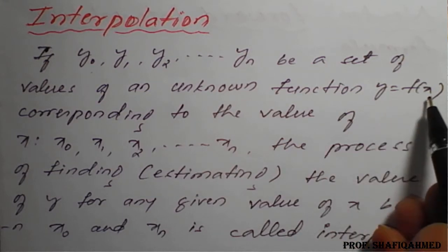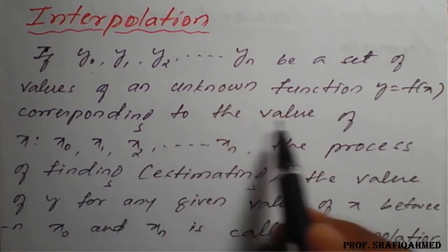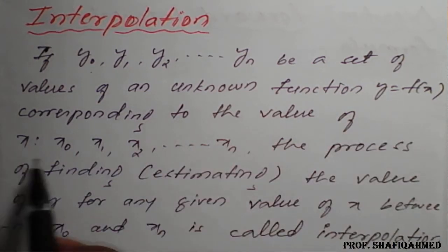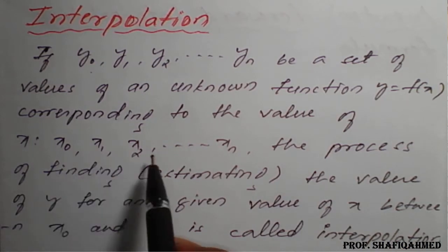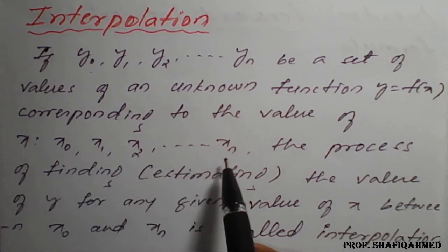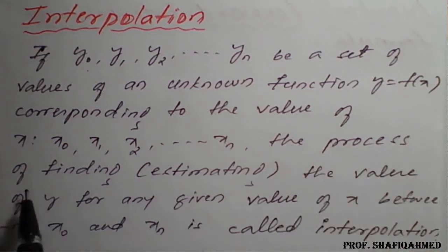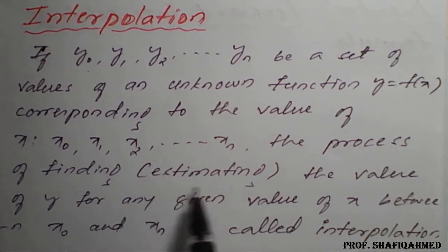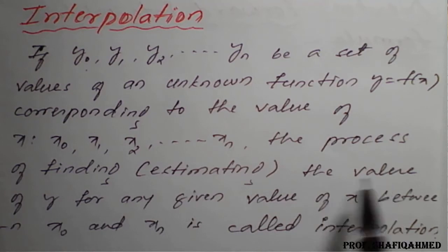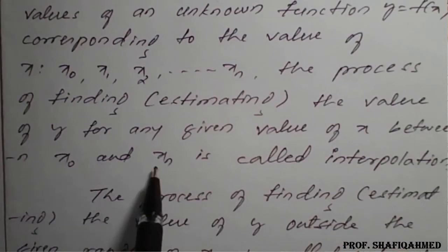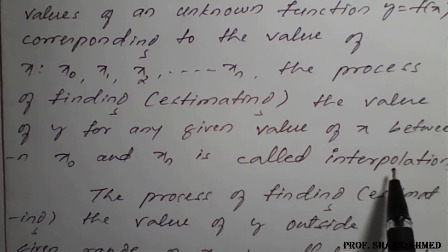y equals f of x corresponding to the value of x that is x0, x1, x2, so on, xn. And the process of finding or estimating the value of y for any given value of x between x0 and xn is called interpolation.